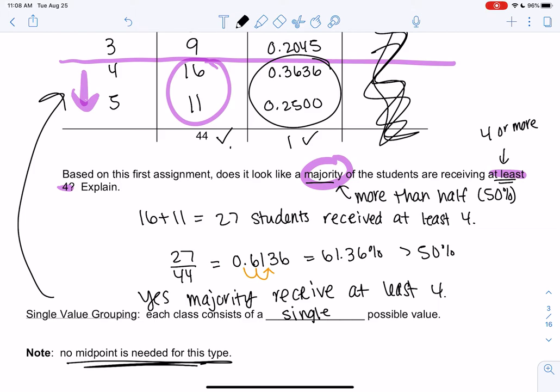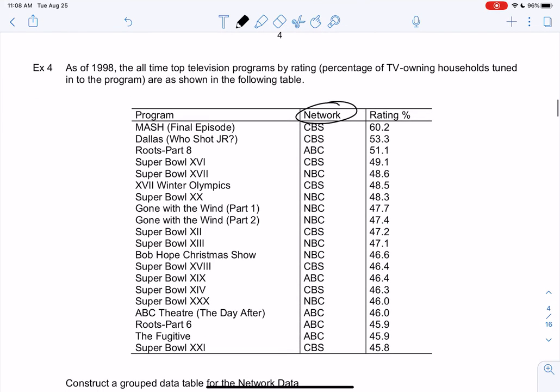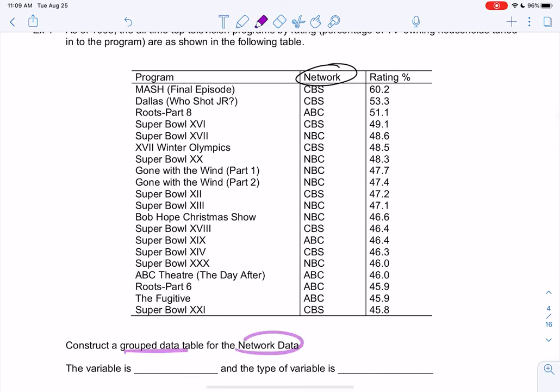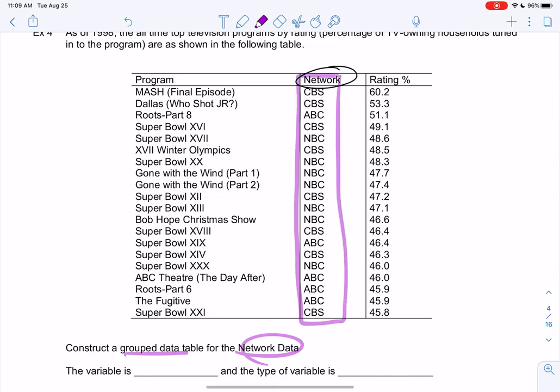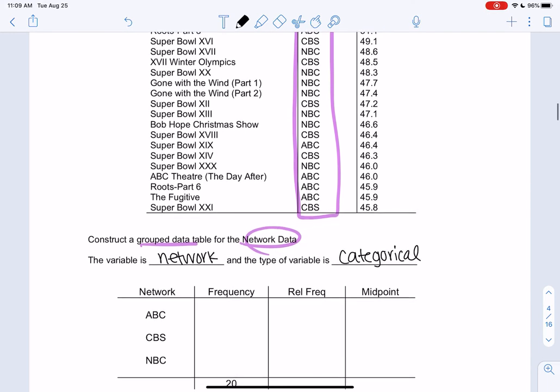So let's do one final example for tables. We haven't done any categorical variables yet. So this next one will be categorical. We're looking at network of a TV program. So this is the top television programs in 1998, and we're going to look at network. These are categories because they're in words. And then the rating is just telling us that they have high ratings, but we're going to ignore that. So we're going to create a group data table for the network data. So we're interested in network. So that is our variable. The channel or the network varies from show to show, and that would be a categorical variable. Because it's in words. There's no number value.